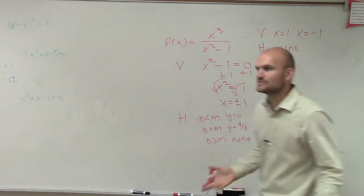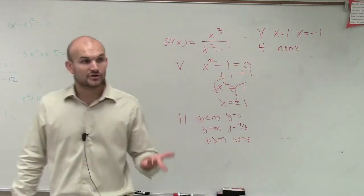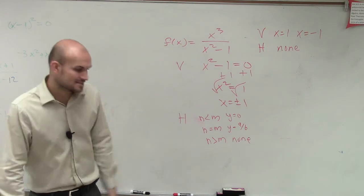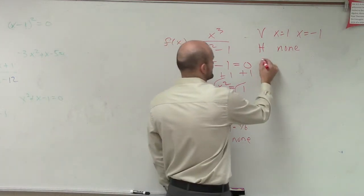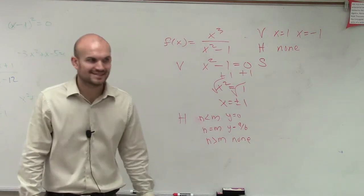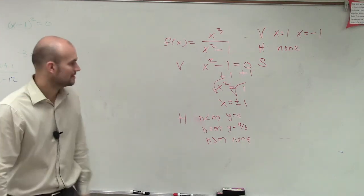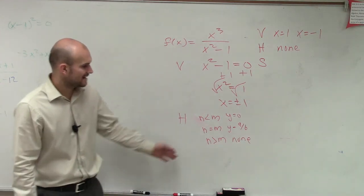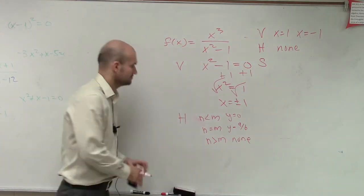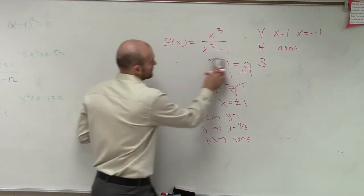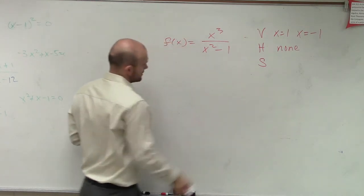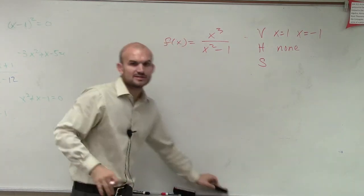So what happens when we don't have a horizontal asymptote? There is still an asymptote that can exist. That asymptote is what we call a slant or oblique asymptote. So here's the new stuff I'm actually going to be teaching today — how we determine our slant asymptote.